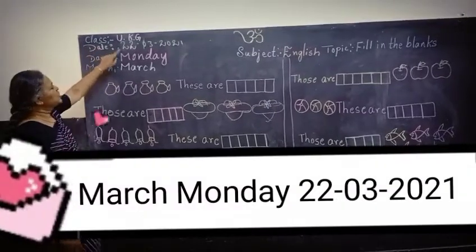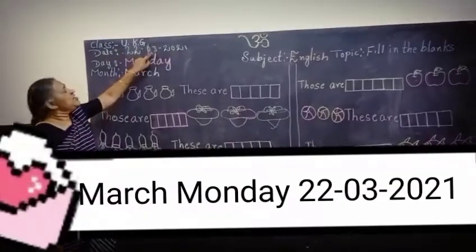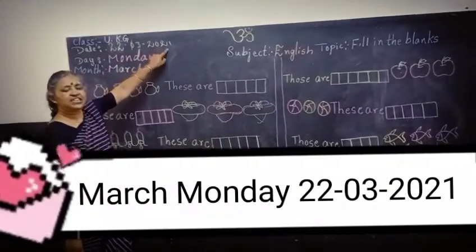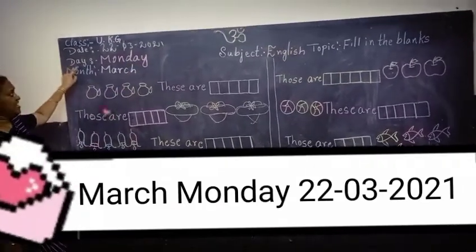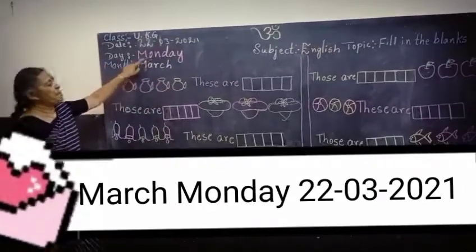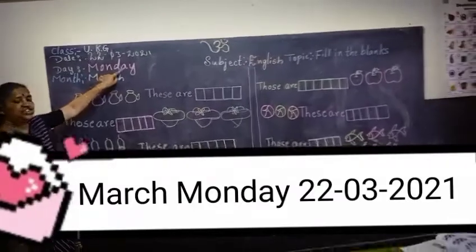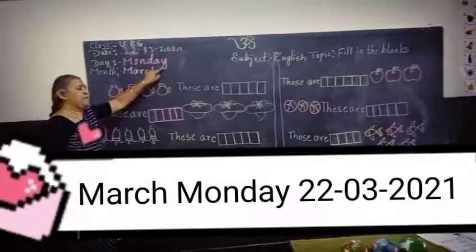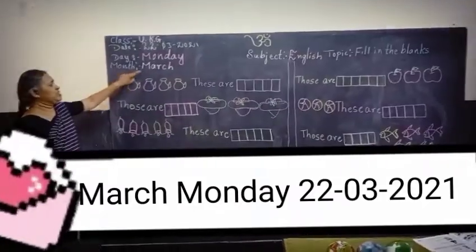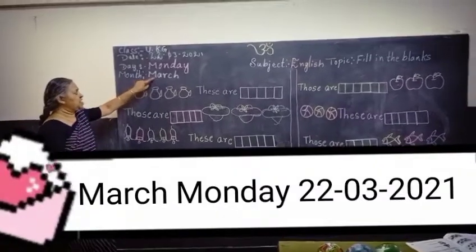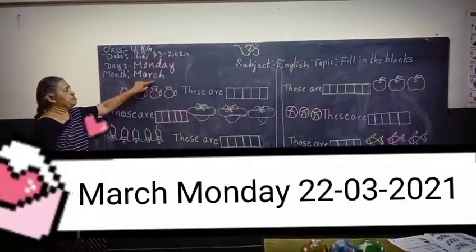Today's date is 23 March 2021. Today is Monday — M-O-N-D-A-Y, Monday. Today's month is March — M-A-R-C-H, March.